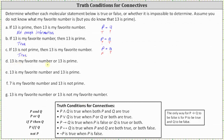For part D: 13 is my favorite number, or 13 is prime. The statement is in the form of P or Q. We don't know whether P — 13 is my favorite number — is true or false, but 13 is prime is true, so Q is true. Since P or Q is true when P or Q or both are true, and Q is true, part D is a true statement.